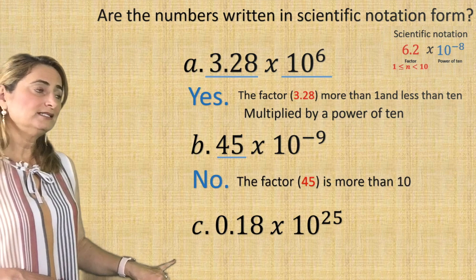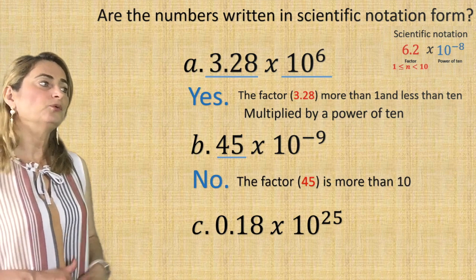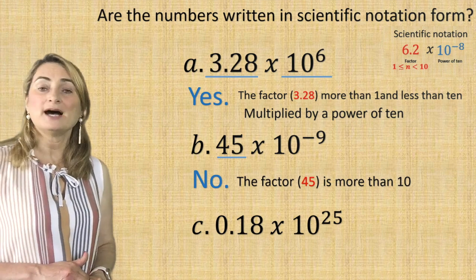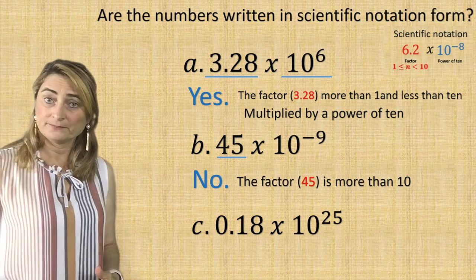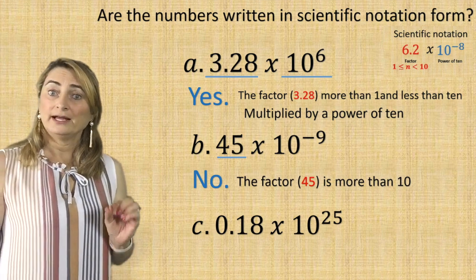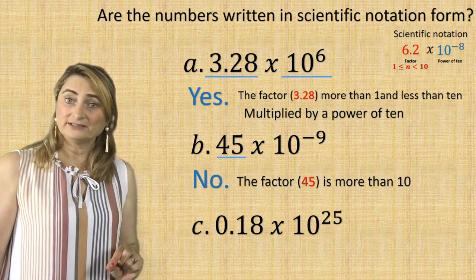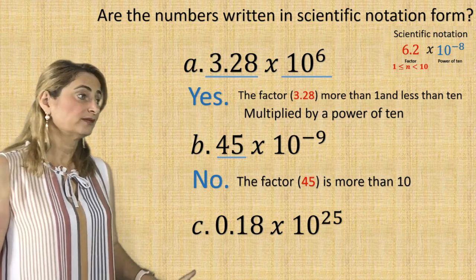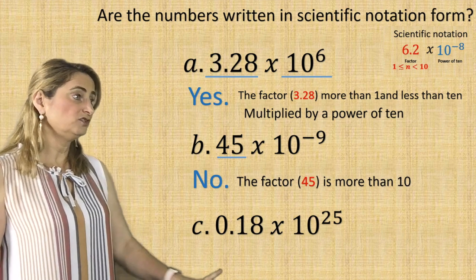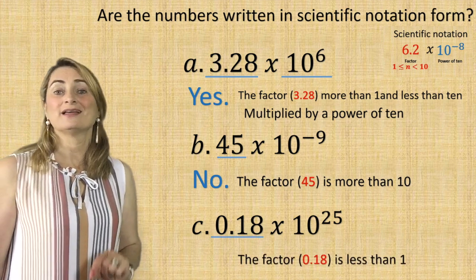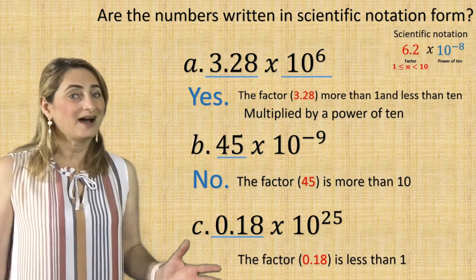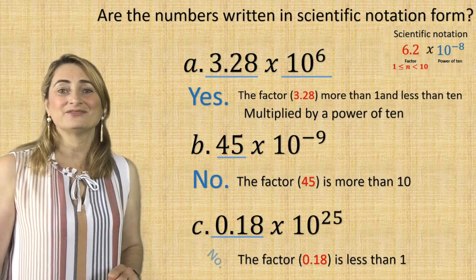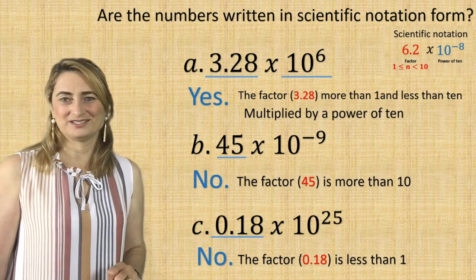The last example: 0.18 times 10 to the power of negative 5. Again, look at the factor first. The factor is 0.18, which is less than 1. So it's not written in scientific notation.